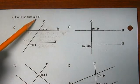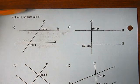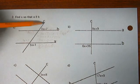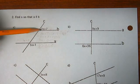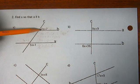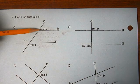Find X so that A is parallel to B. Well, these are same side exterior angles. Do we have same side exterior?